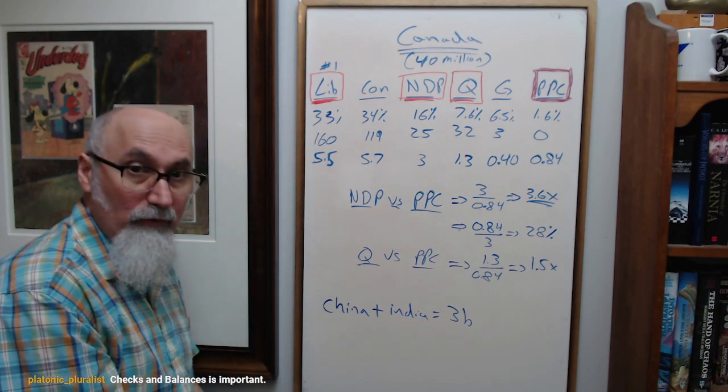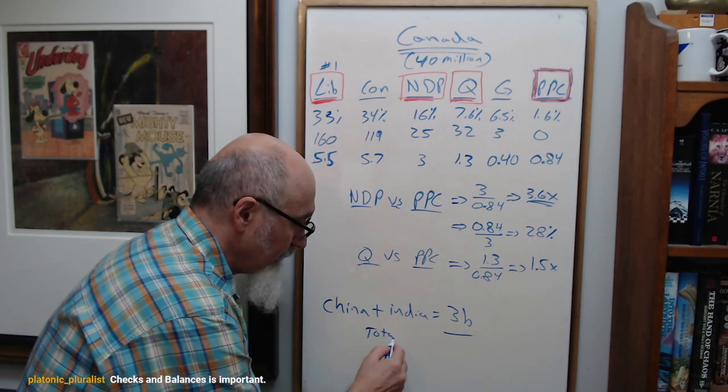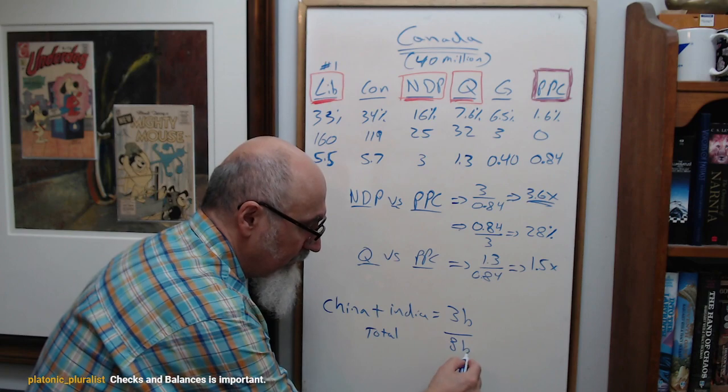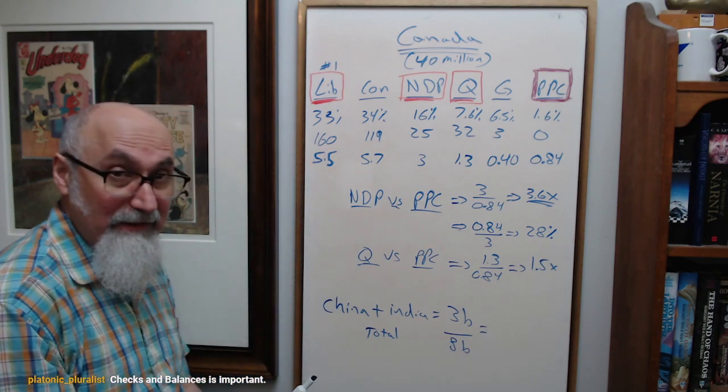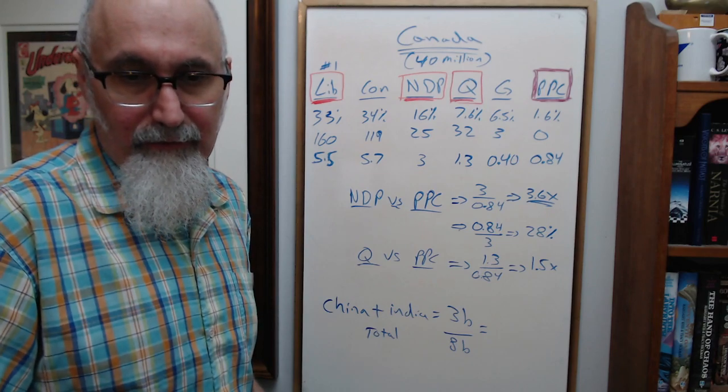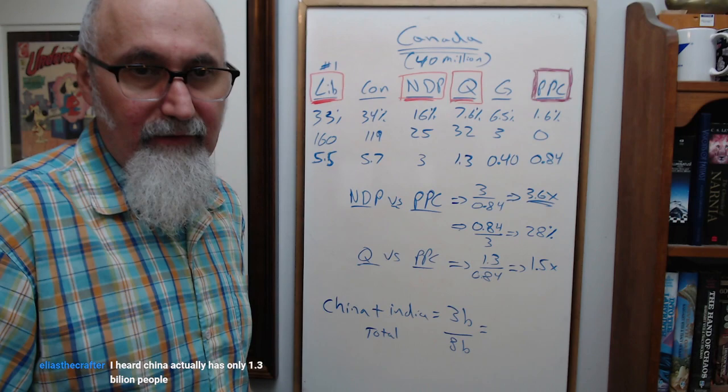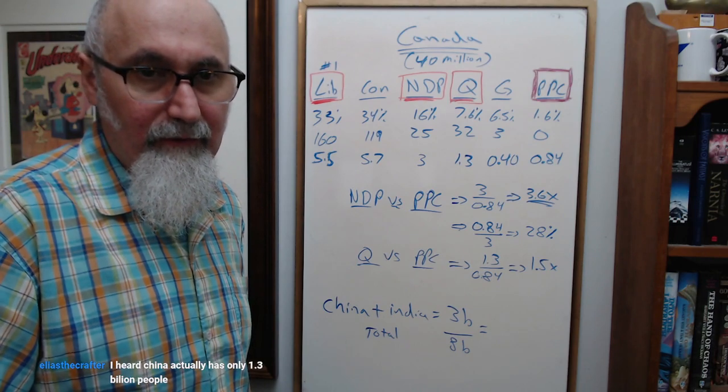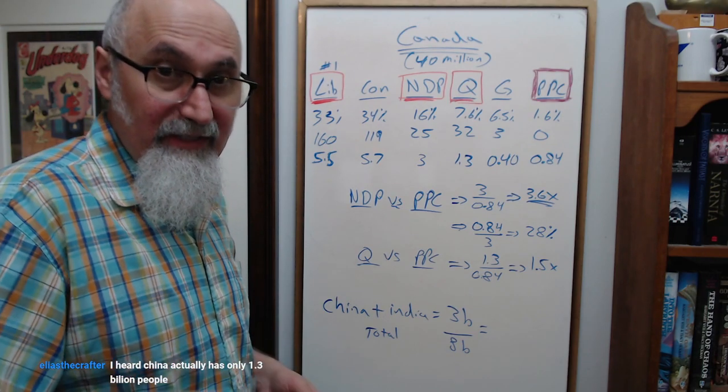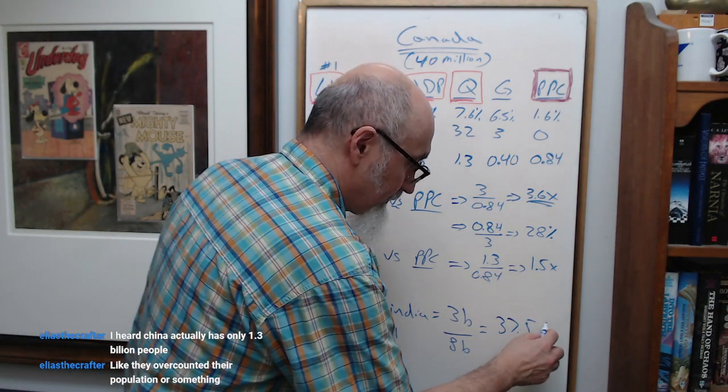So 3 billion people live in China plus India—3 billion total population out of 8 billion world population. That's 3 divided by 8, which is 37.5 percent of the world.